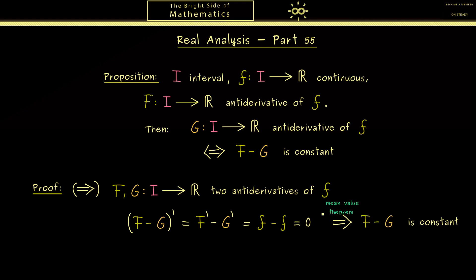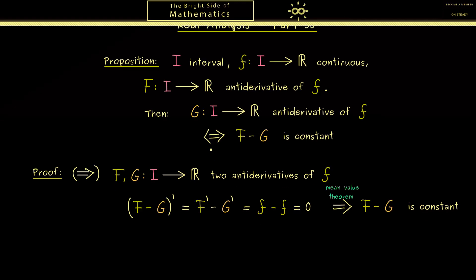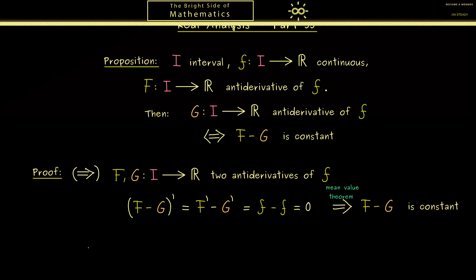Now what comes in here is the mean value theorem, and in fact we have exactly proven this in part 41. So with this you see the first implication here is finished. Then let's immediately go to the second one.